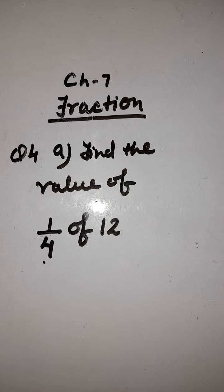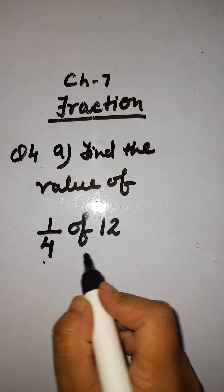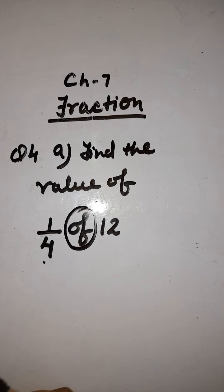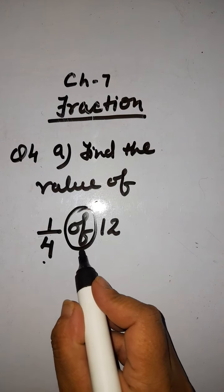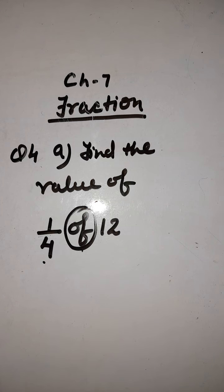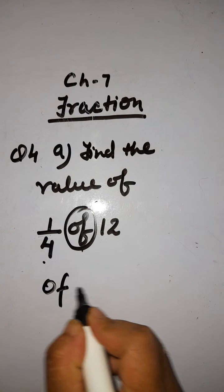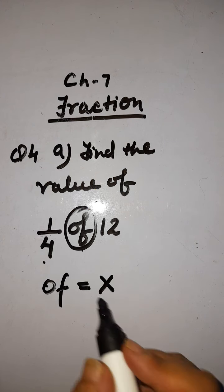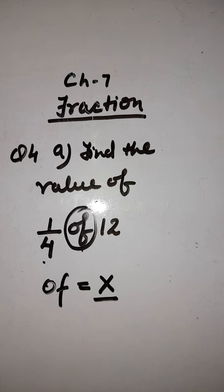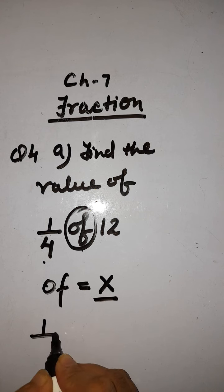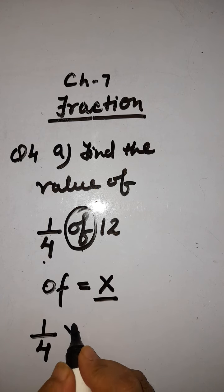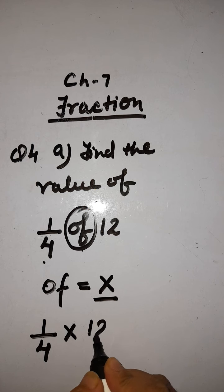Okay, let's do it here. The meaning of 'of' — इस 'of' का मतलब मैंने आपको पहले भी समझाया था — इसका मतलब होता है multiply. Of means multiply. Of is equal to multiply. जो 'of' का मतलब multiplication होता है. So here we have the question: 1 out of 4, 'of' means multiplied by 12.